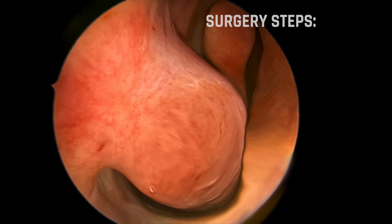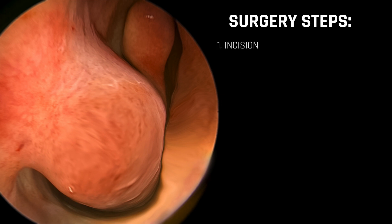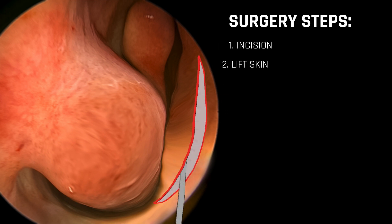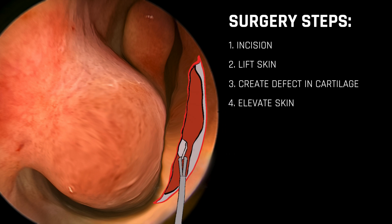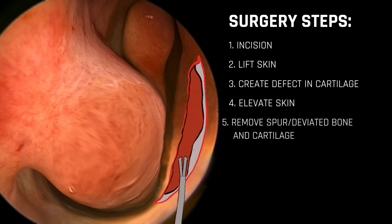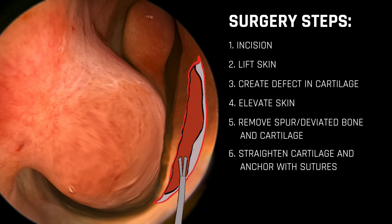The incisions are generally hidden within the nose, as are any dissolvable sutures used to close the incisions. The bone and cartilage within the septum are straightened and some portions are removed, including any spurs that are present. Care is taken to maintain structural support at the front of the nose by leaving a portion of septal cartilage intact or otherwise supported with cartilage grafts.